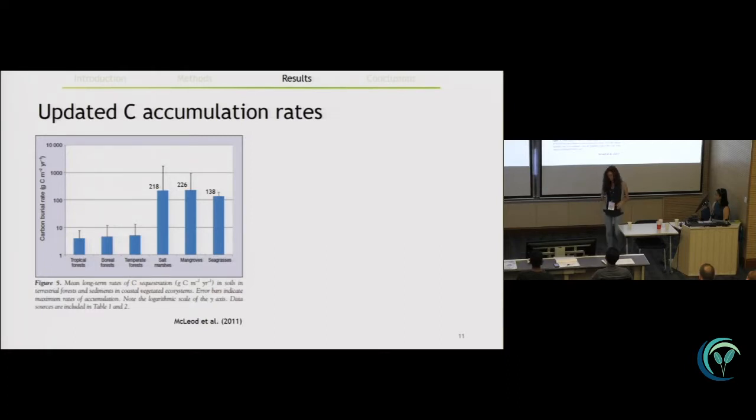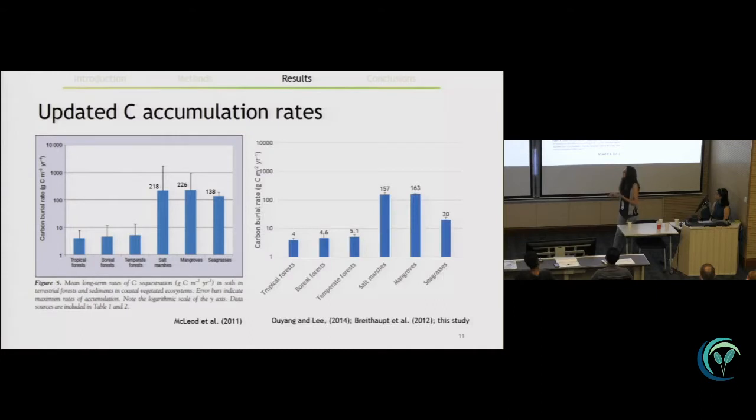if we update this figure with the estimates of this study, but also the estimates that have been released in mangrove and salt marshes, the new updated figure would look like this today. And in case of seagrass, the carbon accumulation rate in the long term, it's seven times lower.